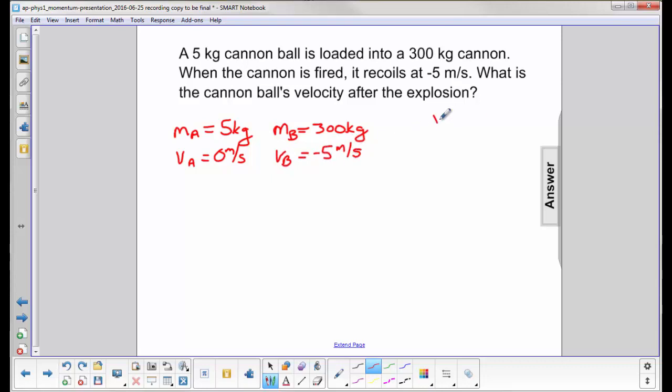That means if we had a little sketch here, here's the cannon, here's the cannonball. The cannonball goes this way, the cannon goes in the opposite direction, which is why we have a negative velocity there. What is the cannonball's velocity after the explosion?